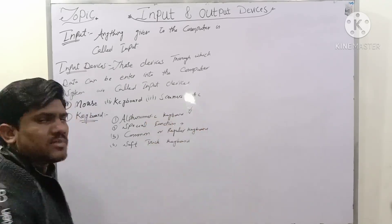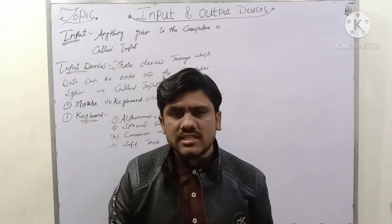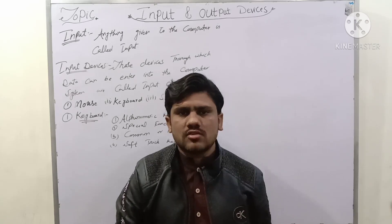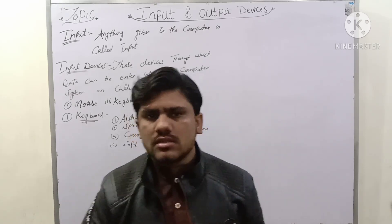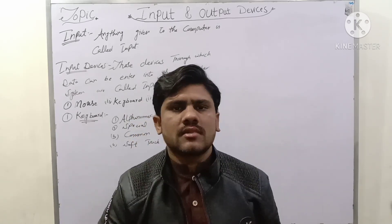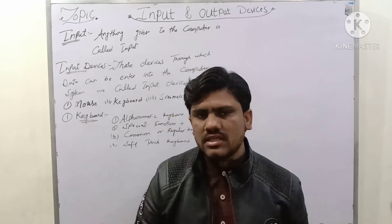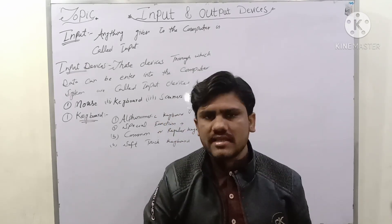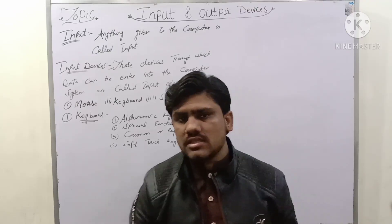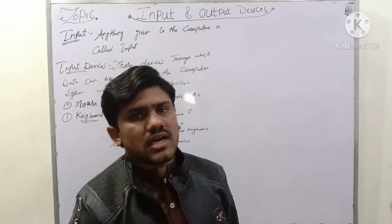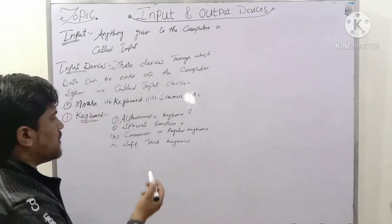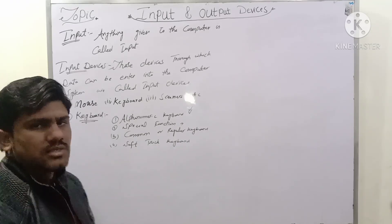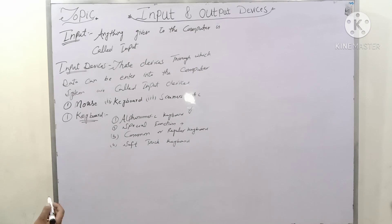Alphanumeric keyboards contain both alphabetic characters — A, B, C to Z — and numbers 0 to 9, along with function keys, numeric keys, alphabetic keys, arrow keys, and number keys. Special function keyboard, common or regular keyboard, and soft touch keyboard are the other types of keyboard.